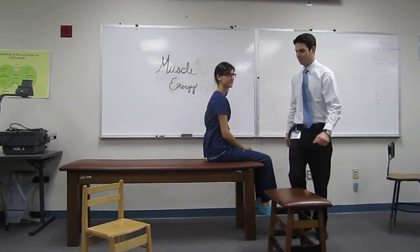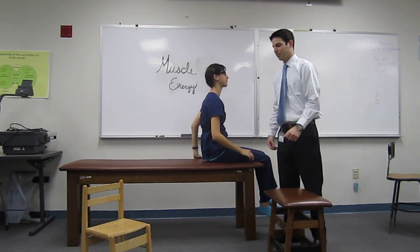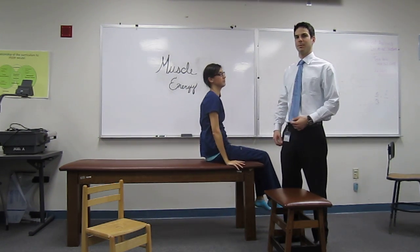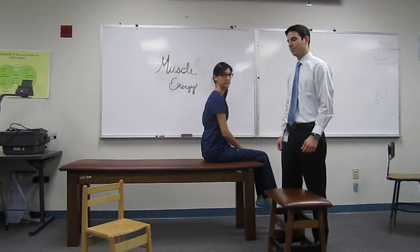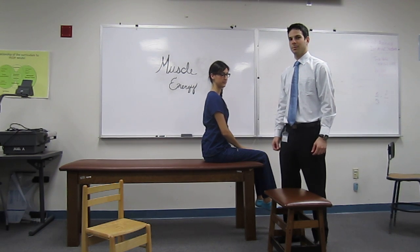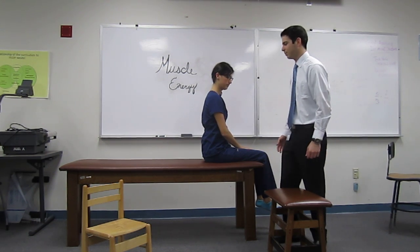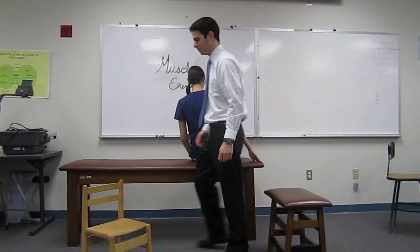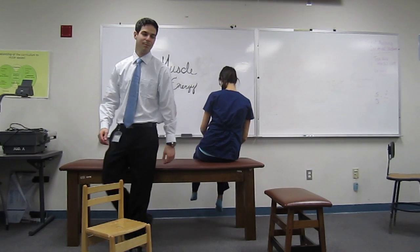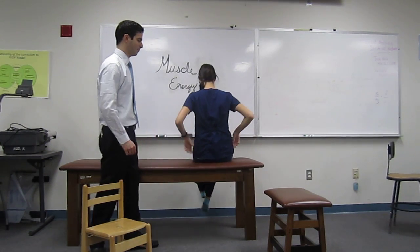Along with the commonly seen tight right psoas, you have a type two dysfunction where you have flexion, right rotation, and right side bending of the L1 or L2 vertebrae. To correct the vertebral segment, you could also use muscle energy.